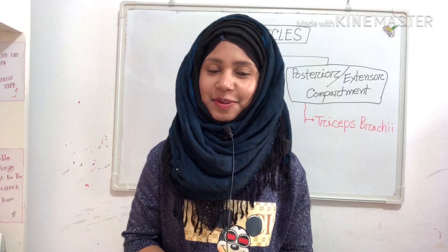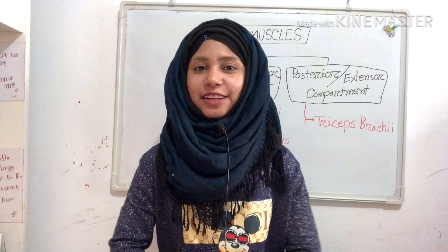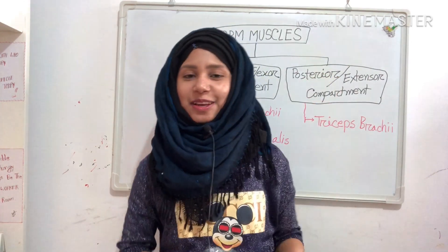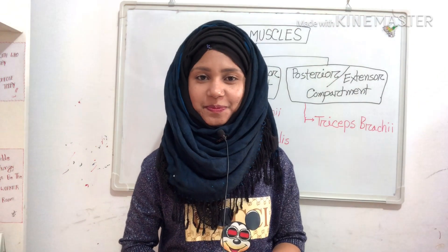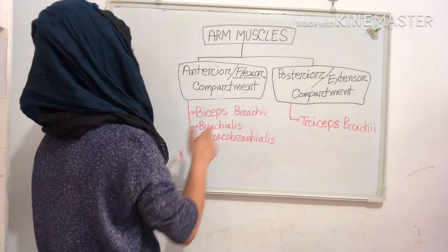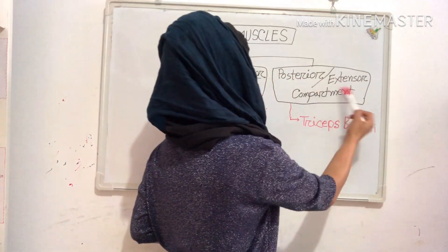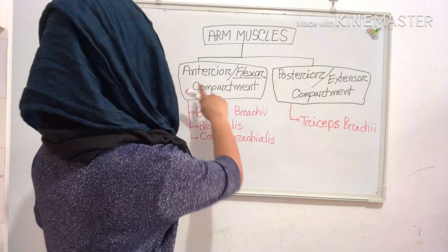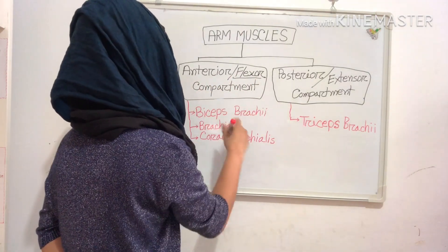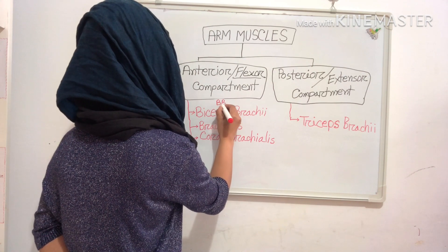Hey everyone, assalamualaikum, welcome back. I'm Shanat Janat and today I'm going to discuss arm muscles. We can divide our arm into two compartments: anterior flexor compartment and posterior extensor compartment. The anterior flexor compartment has three muscles — you can remember this as BBC.